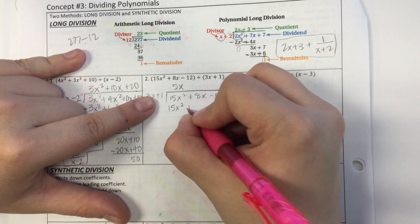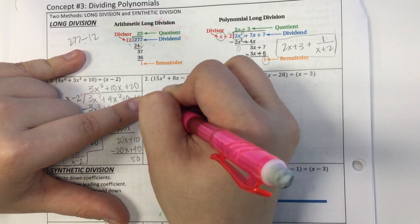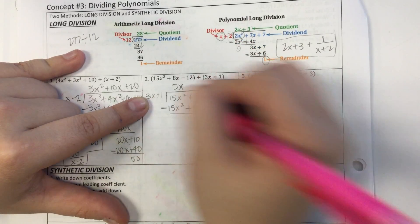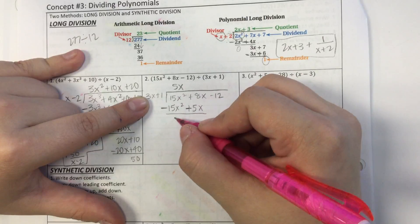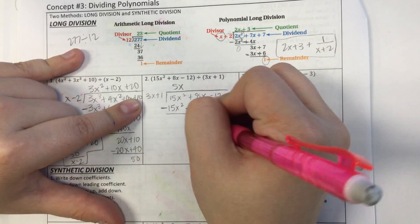5x times 1 is 5x. And then I subtract the whole thing, changing both of these to a minus. These go away. 8x minus 5x is 3x. And I bring down the negative 12.